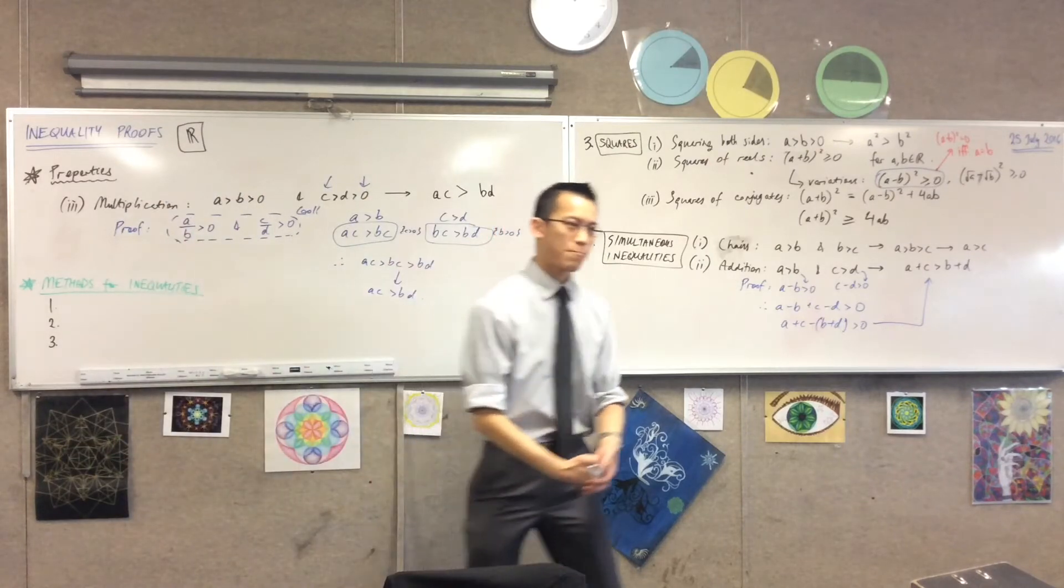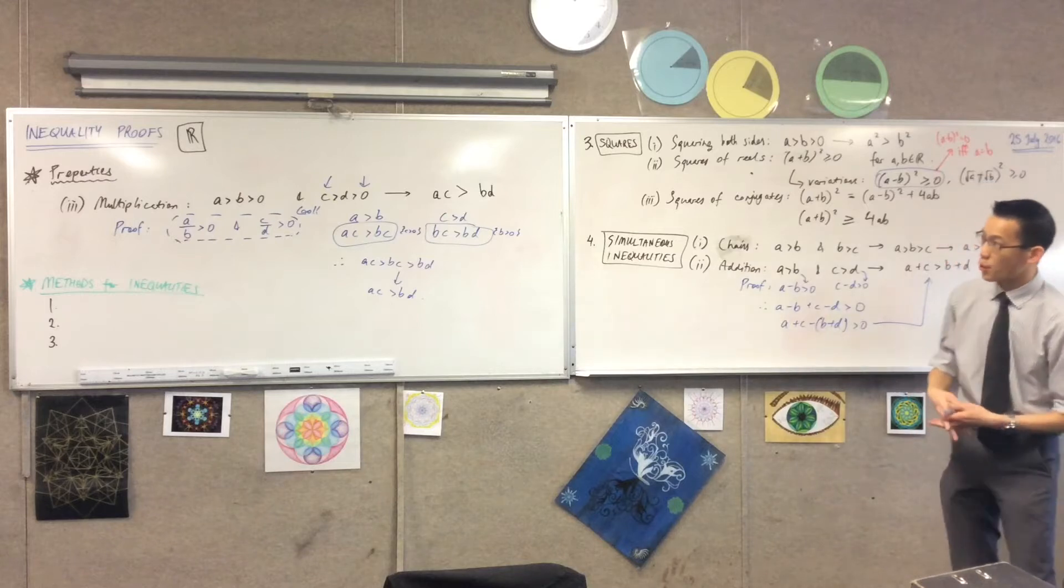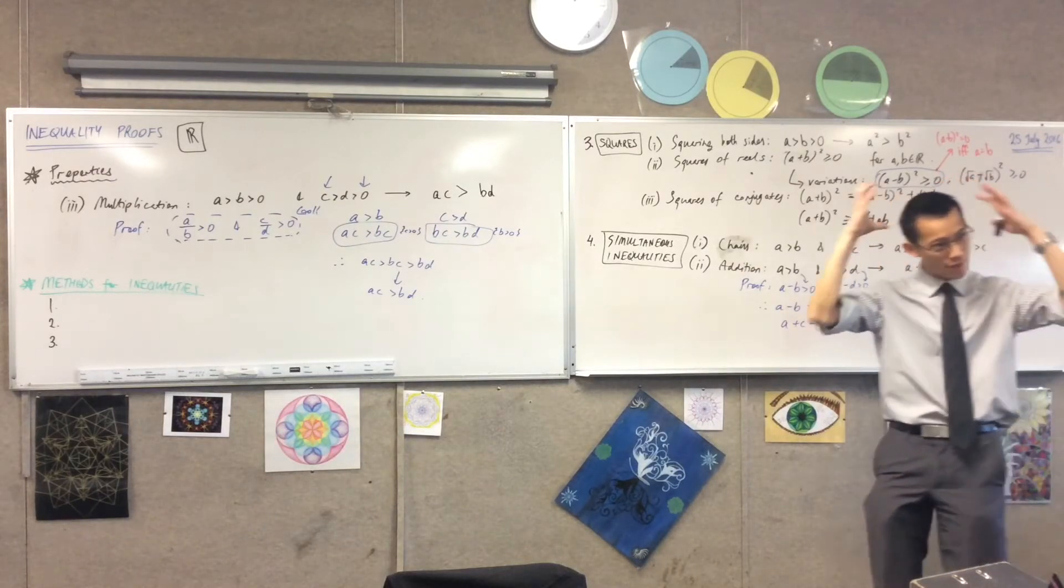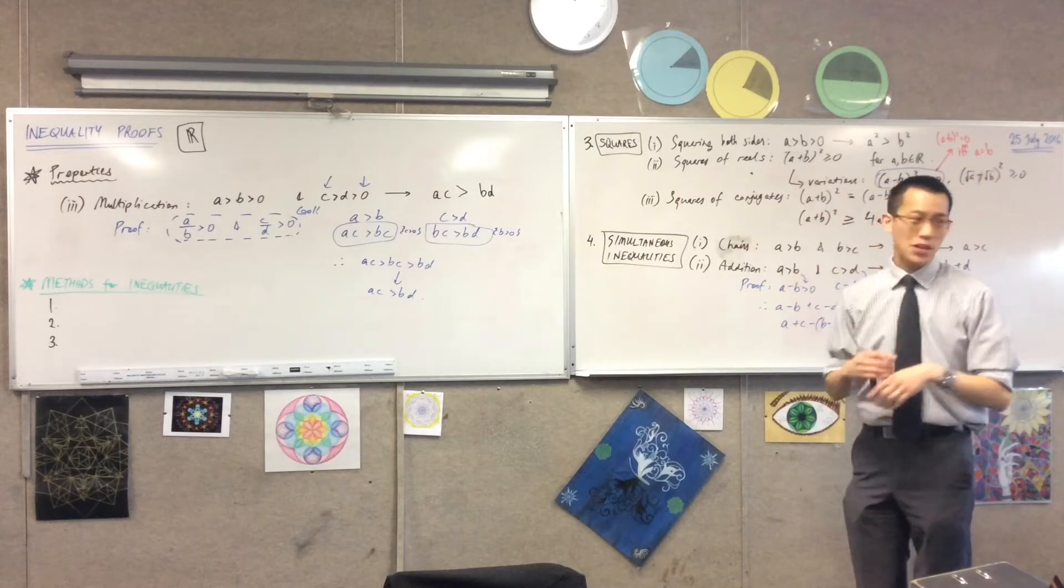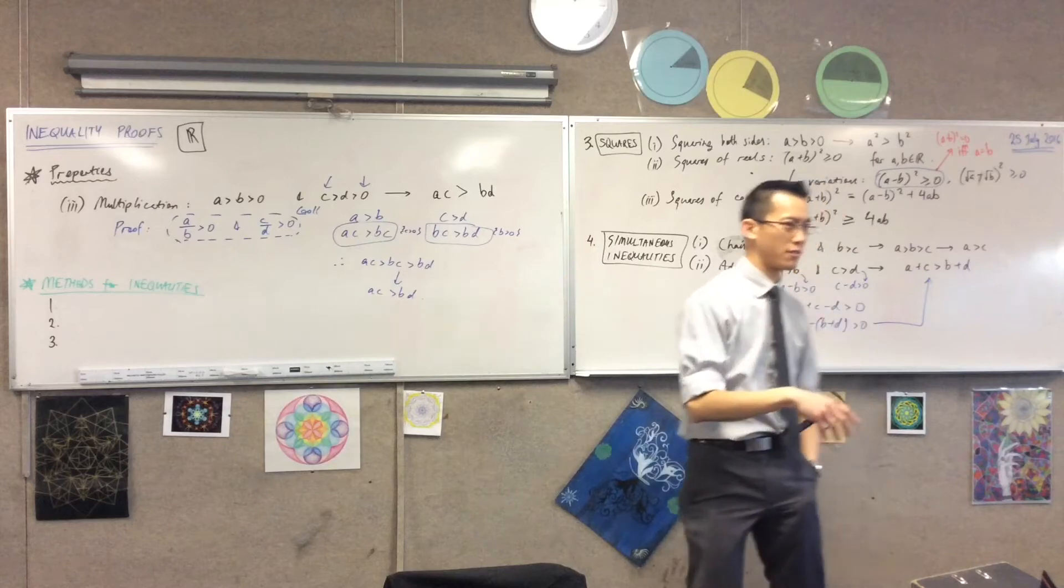These properties are things you can quote. They're quotable results, so they're really important. They've got to be part of the fabric of your mind because when you're given an inequality, these are your background.